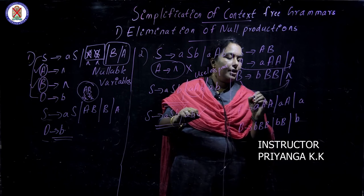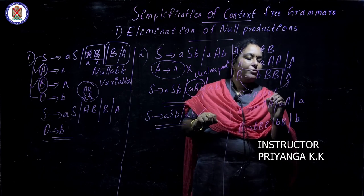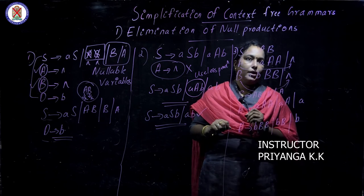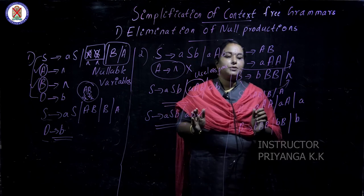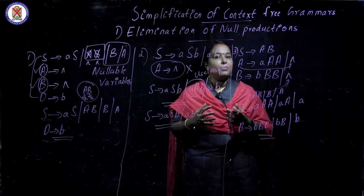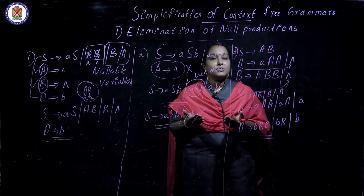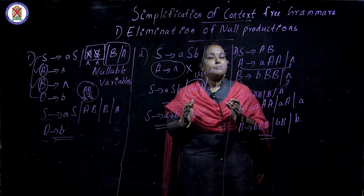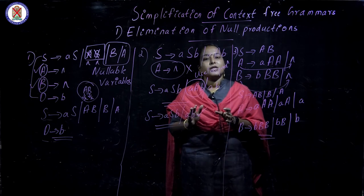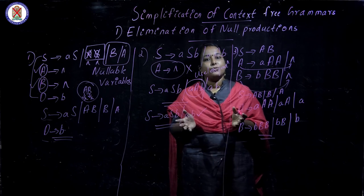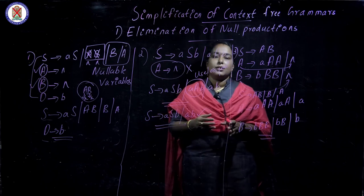For S, we preserve A B as a whole, then make A null to get B, and make B null to get A. So the key principle is: every time you must preserve the production and then eliminate the nullable variable. By preserving, the original language recognized by the grammar is maintained. The simplified grammar must recognize the same language as the original grammar that had null productions.